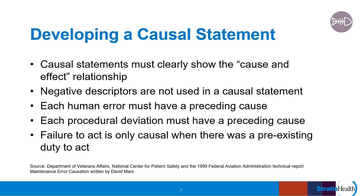If there was a deviation from a policy or procedure, that must also have a preceding cause. For example, an employee did not realize the appropriate steps to take as this was not included as part of orientation to their job. And finally, identifying failure of an individual to act can only be considered a cause if that individual was expected to or had a duty to act in the first place.